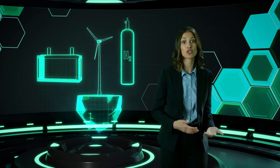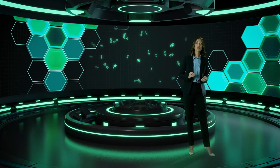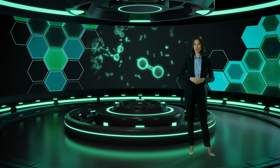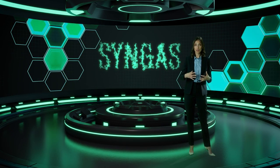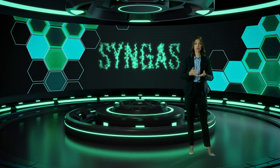Another way of producing SAF is through renewable energy, water and air capture, known as power to liquid, where renewable electricity is used to electrolyze water to produce hydrogen and capture CO2 from the atmosphere. The CO2 can then be converted to carbon monoxide, and when combined with hydrogen, turns into synthetic gas, or syngas, as it's more commonly known.